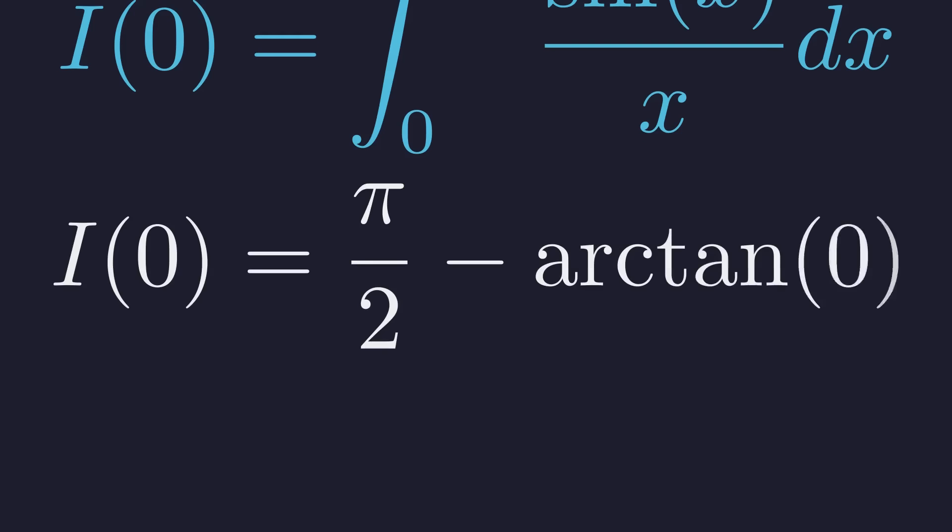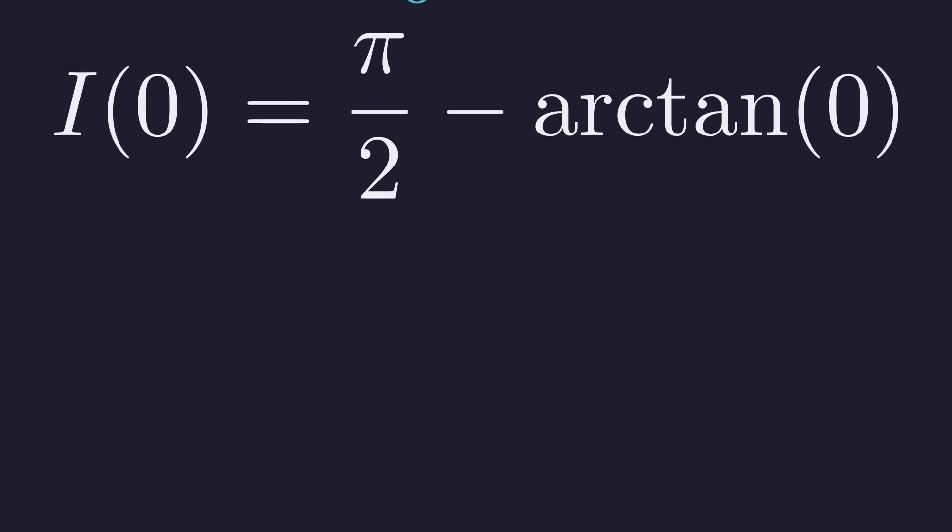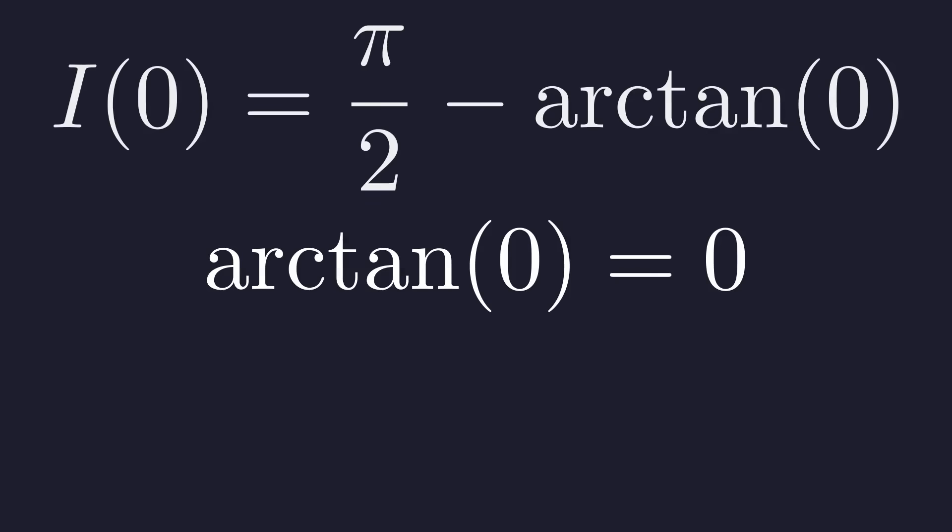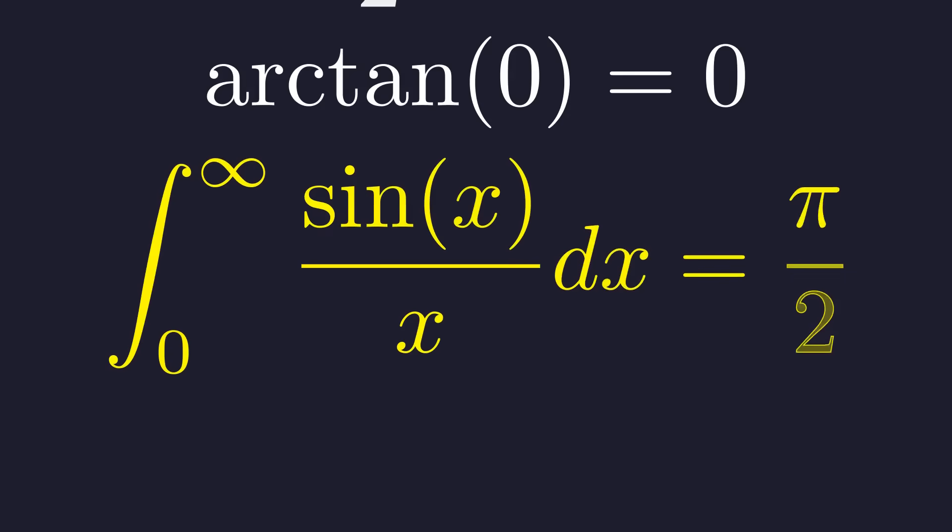This gives us pi over 2 minus the arctangent of 0. The arctangent of 0 is simply 0. And so, we have our astonishing result. The integral of sine of x over x from 0 to infinity is equal to pi over 2.